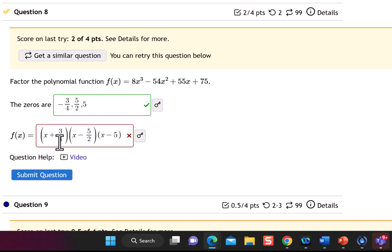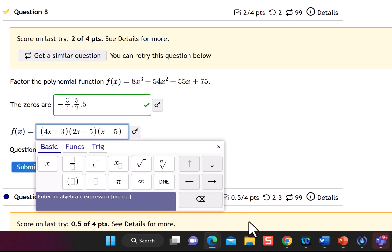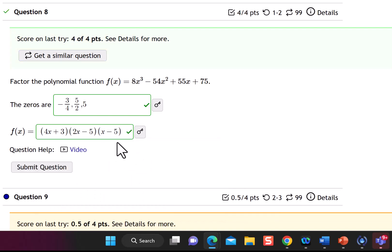So really what I need to do is I need to clear these fractions. So I'm going to multiply the first term by 4, I'm going to multiply the second term by 2, and I'm going to leave the last term alone. So the first term multiplied by 4 gives me 4x and then just 3. My second factor multiplied by 2, I get 2x and then just 5. And my last term is fine. Let's try now and we can see we got the answer correct.